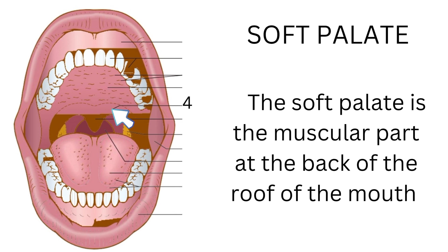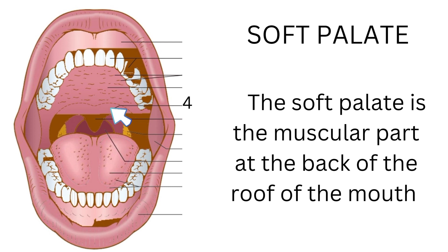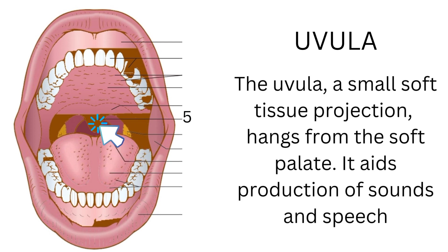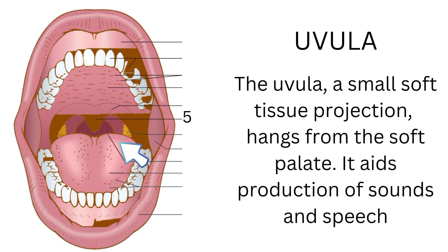The soft palate is the muscular part at the back of the roof of the mouth. The uvula is a small soft tissue projection that hangs from the soft palate. It aids in the production of sound and speech.